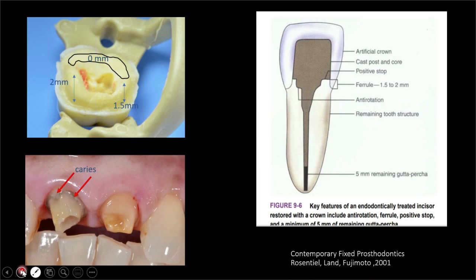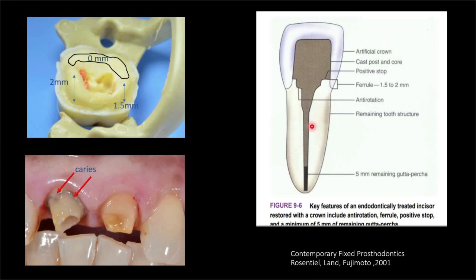¿Qué otra cosa hay que considerar? El férrule: es el excedente que tenemos de dentina en nuestra corona clínica. ¿Para qué sirve? Me sirve porque es el que me va a dar la resistencia, va a transmitir las fuerzas a lo largo de todo el órgano dental, porque va a estar rodeado del poste —ya sea de fibra de vidrio, colado o circonio—. Este férrule es el que va a transmitir la carga hacia la estructura dentinaria.